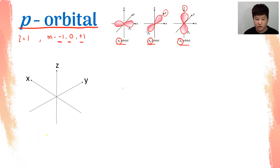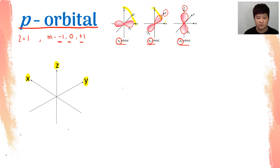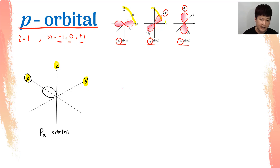If you are going to draw in your exam, first thing — axis. Make sure you draw your axis and label them. It's not necessarily going to be the same arrangement, but you must label them. I'm going to start off with the PX orbital. PX orbital means my dumbbell will be on the X axis. You can shape them simply, and that is your PX orbital, where the dumbbell is on the X axis.